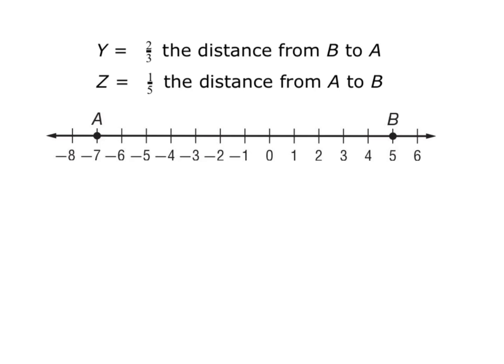From A to B, counting the units: one, two, three, four, five, six, seven, eight, nine, ten, eleven, twelve units. So for point Y, I want to go two-thirds of that distance.